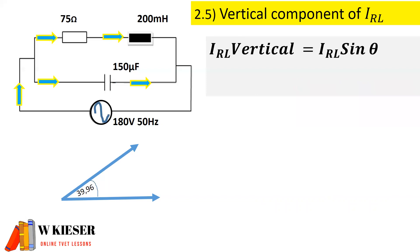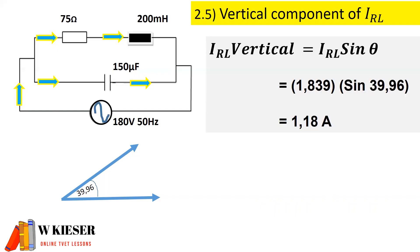In part 5 we need to determine the vertical component of the current flowing in the inductive branch. The vertical component is current multiplied by sin theta. Therefore the current in the inductive branch multiplied by sin of the phase angle 39.96 degrees gives a vertical component of 1.18 amps.